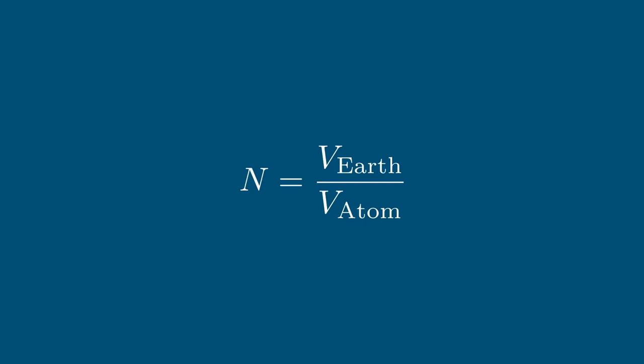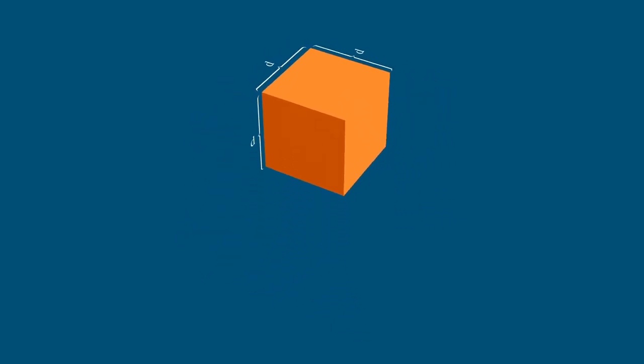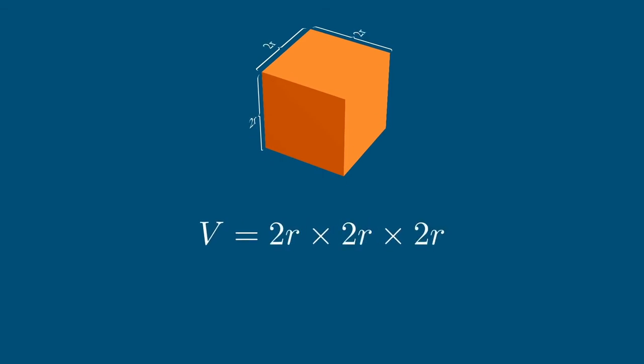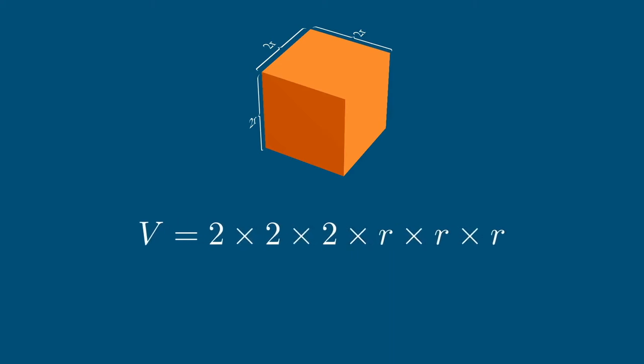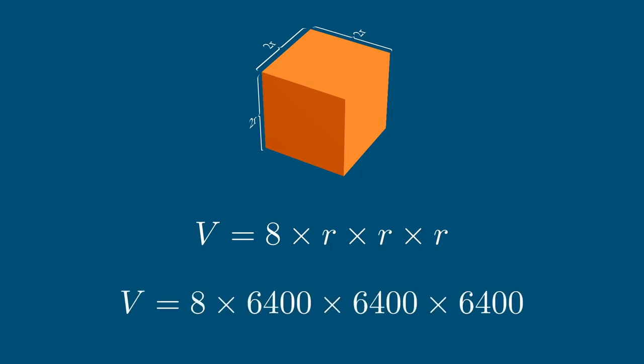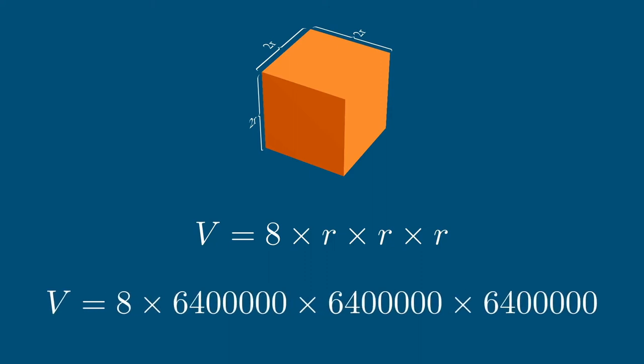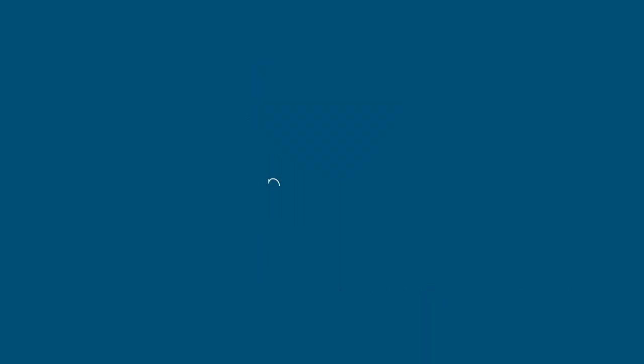Let's begin with the volume of the Earth. Just like last time, we're going to use the outrageous approximation that the Earth is a giant cube — not because I hate pi, but I don't want to overcomplicate things. The volume of a cube is width times depth times height — the same number three times. We call it d because it's the diameter, which is twice the radius. We do a bit of mathematical jiggery-pokery to collect those twos together, then substitute in 6,400 kilometers. In science we use meters, so we add three extra zeros — a thousand meters per kilometer.